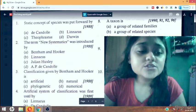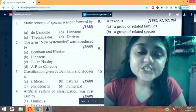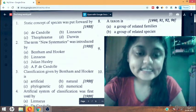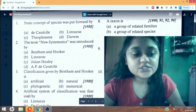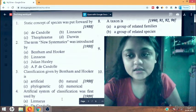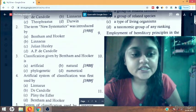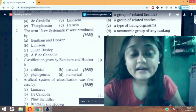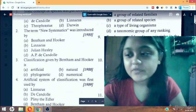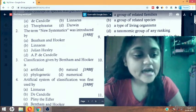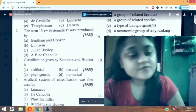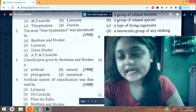Fourth: artificial system of classification was first used by. This question came in 1989, a very important question which may come in your next NEET 2021.